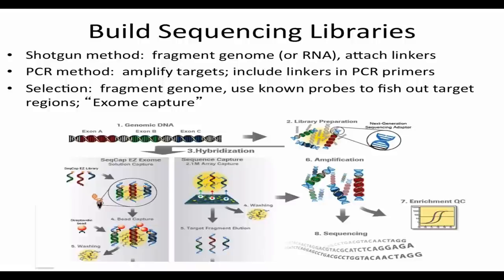The key advantage of exome sequencing is enrichment for coding sequences, which are about 1-2% of the genome, making your data much richer. The cost is about 100-fold less, so in theory you could sequence 100 patients for the cost of one whole-genome run, or get deeper coverage to more accurately call mutations. Exome sequencing has become very popular — probably the most popular form of genome sequencing right now. The 1000 Genomes Project and the Cancer Genome Atlas mostly have exome-based sequencing data.